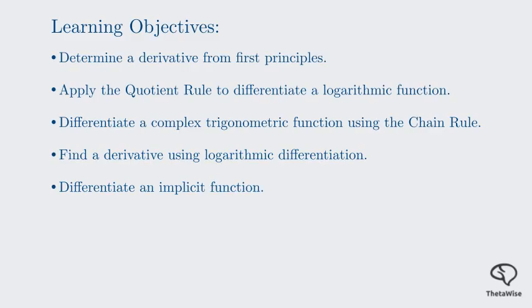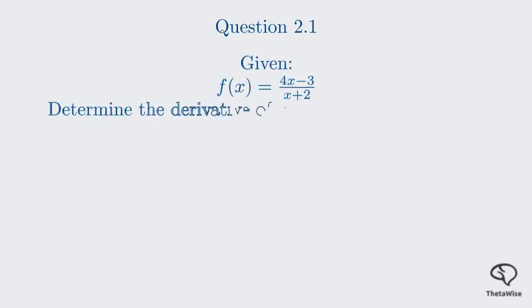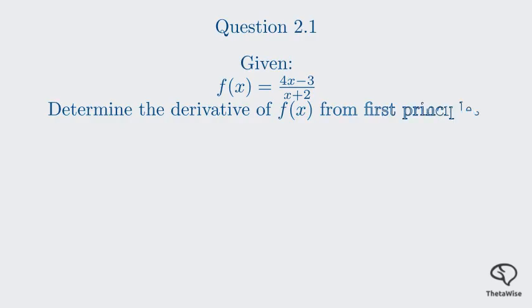We'll work through each part step by step, using clear, color-coded visuals. Let's get started. Our first problem is Question 2.1. The question asks us to find the derivative of f which equals 4x minus 3 divided by x plus 2, from first principles.